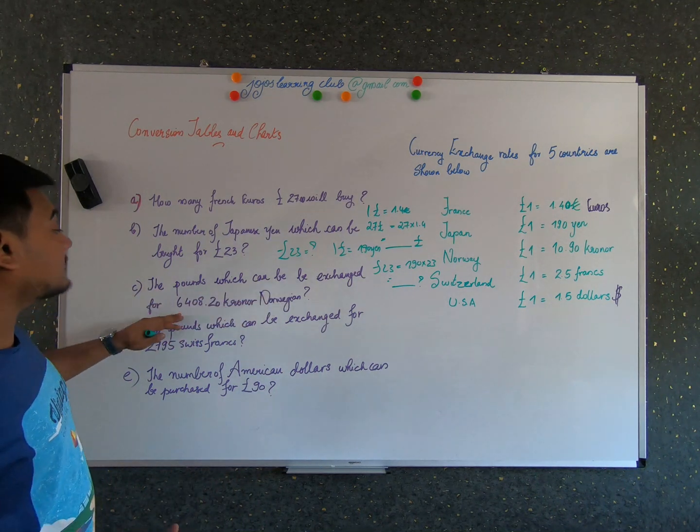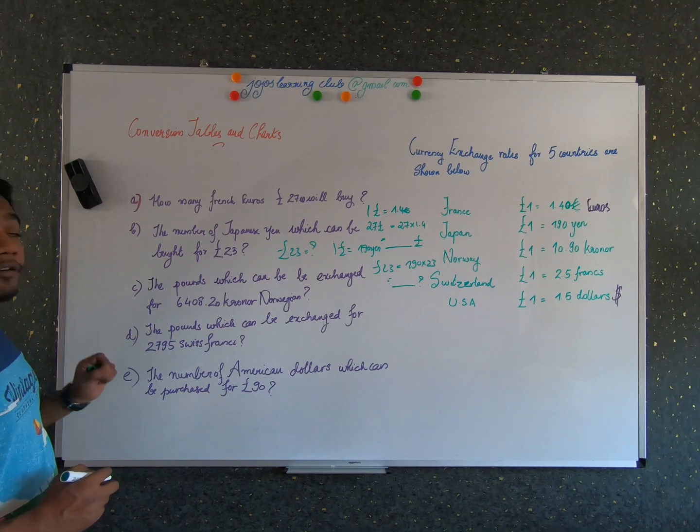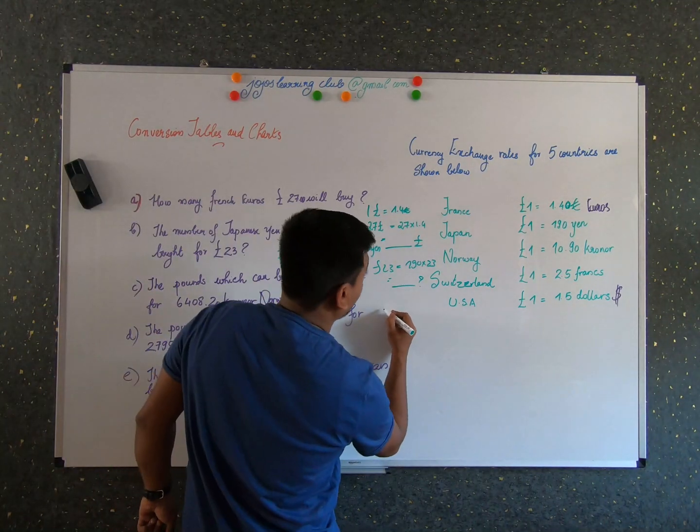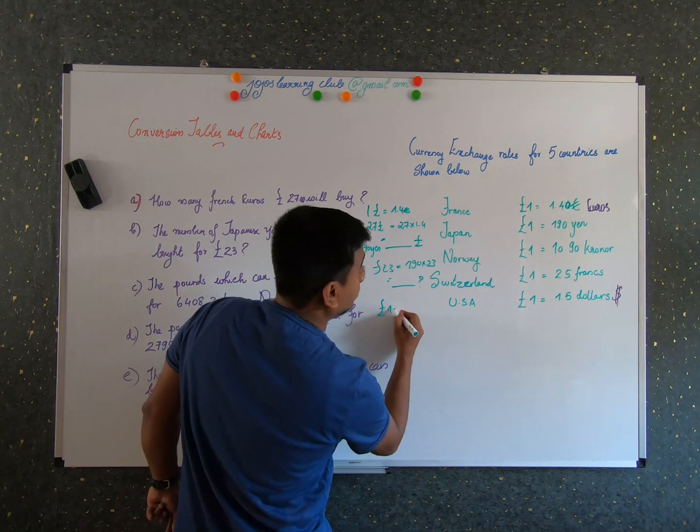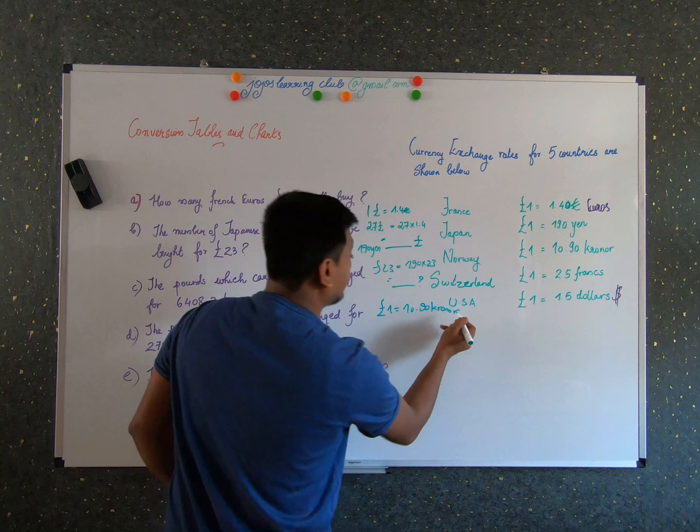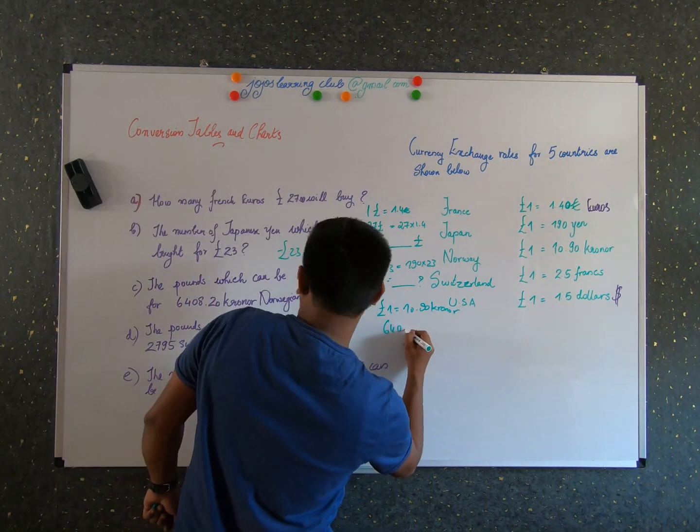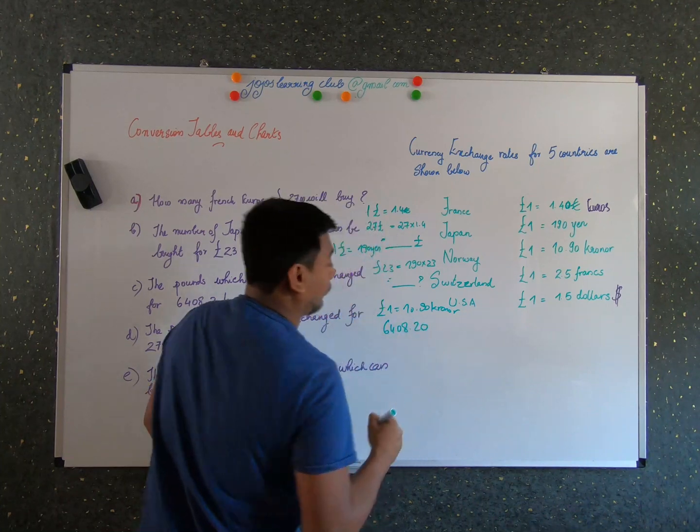So the next problem is the pounds which can be exchanged for 6408.20 Norwegian Krona. So we have now, we know that one pound is 10.90 Krona.